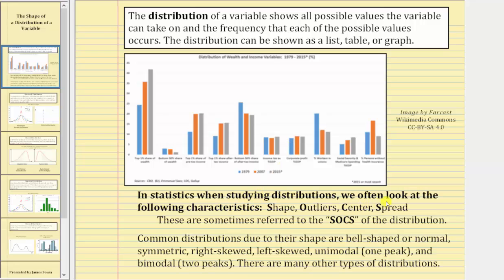Here we see several distributions shown as bar graphs. In statistics, when studying distributions, we often look at the following characteristics: Shape, outliers, center, spread. These are sometimes referred to as the SOCS of the distribution.